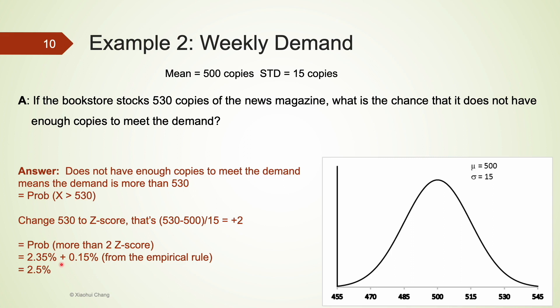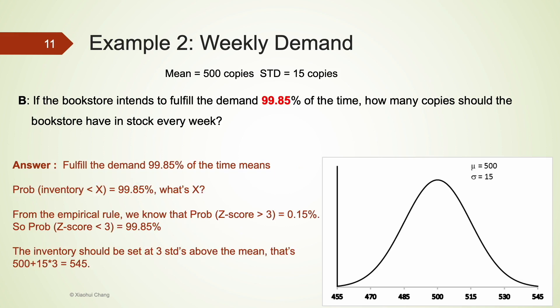To find the area to the right of z = +2, we use the empirical rule. Between z = +2 and z = +3, the area is 2.35 percent, and beyond z = +3 it's 0.15 percent. In total that's 2.5 percent, meaning about 2.5 percent of the time the bookstore does not have enough copies to meet demand.